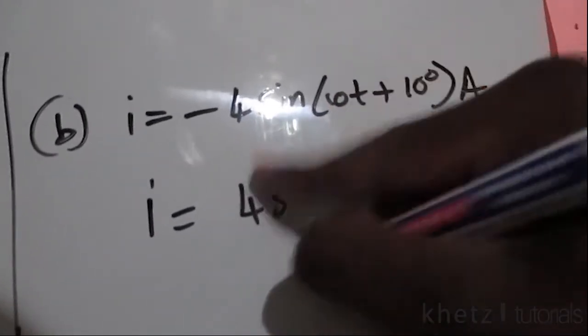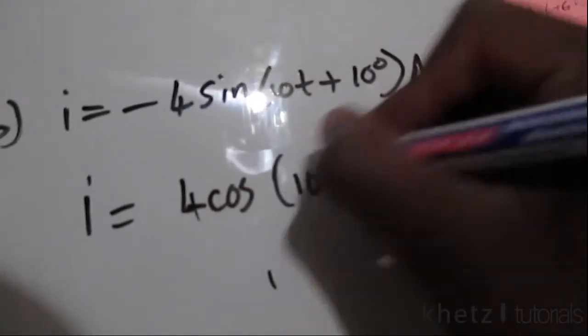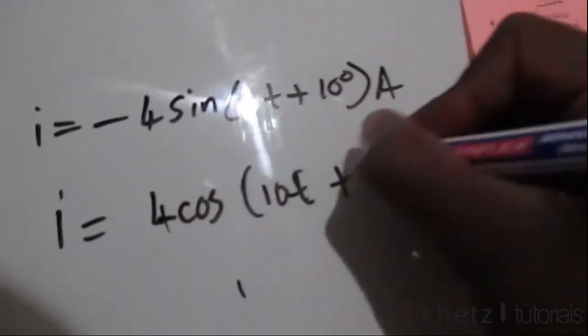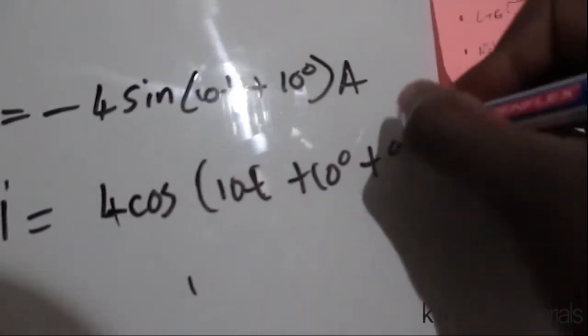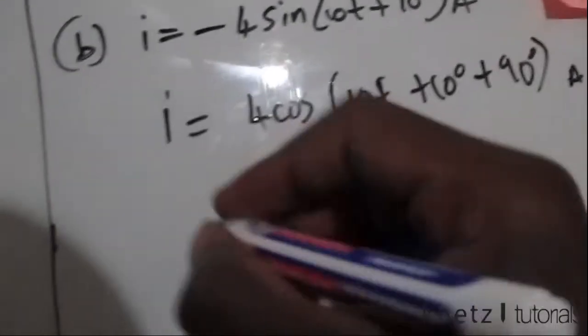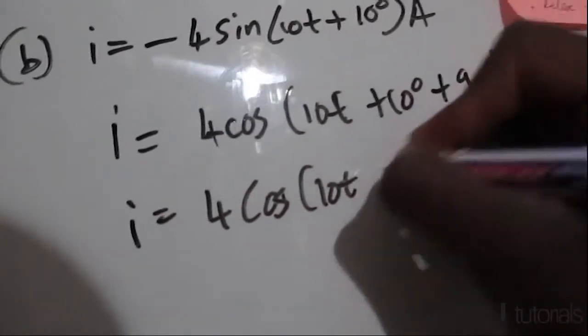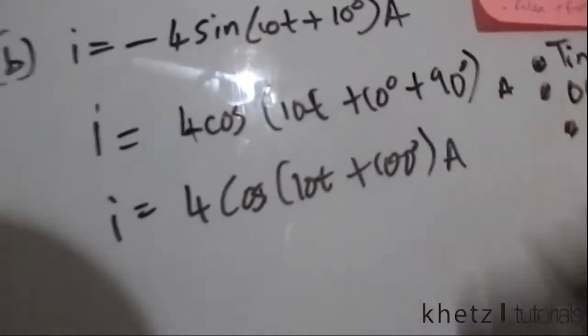So it's going to become 4 cos 10t plus 10 degrees plus 90 degrees. The resulting angle here is 100, so i equals 4 cos 10t plus 100 degrees amperes.